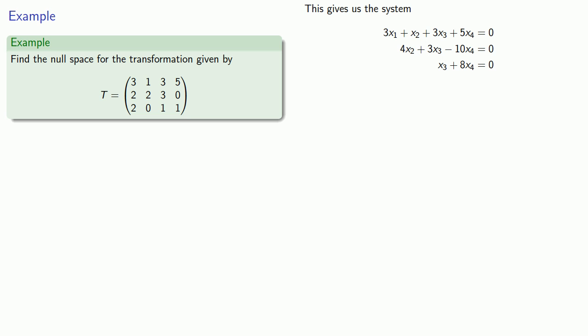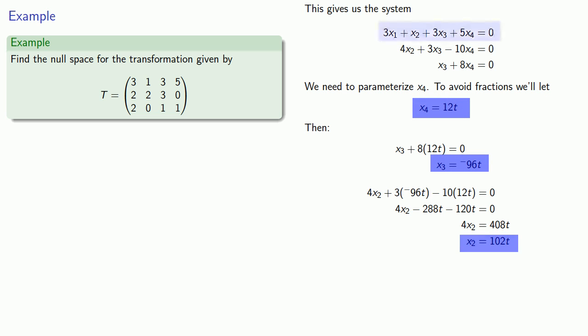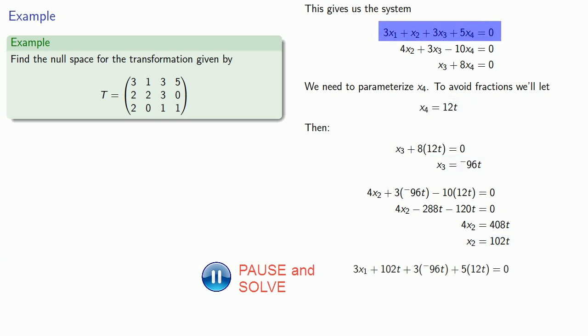Now we can parameterize our solutions. Since x₄ never appears as a leading variable, we need to parameterize x₄, and to avoid fractions, we'll let x₄ = 12t. We can then substitute this value into the equation involving x₃ and find x₃ = -96t. We can substitute the values of x₃ and x₄ into the second equation, which allows us to solve for x₂. Then we can substitute the values for x₂, x₃, and x₄ into the first equation and find a value for x₁.